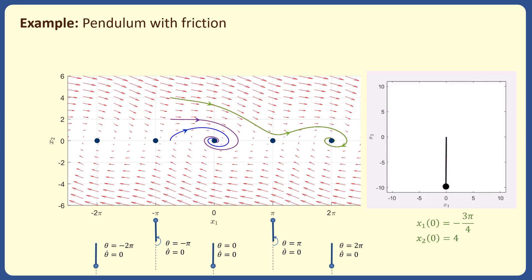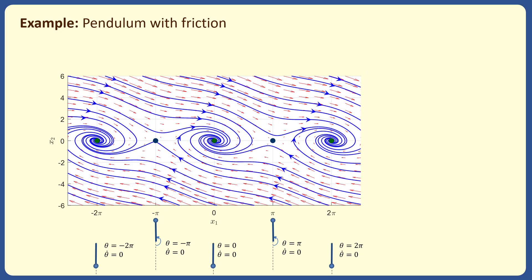We now plot the phase portrait of the system on top of the vector field diagram. Using the phase portrait, we can see the trajectories of the system for a large number of initial conditions. The vector field, however, has some information that the phase portrait doesn't — it shows how quickly or slowly x changes in the plane, which can be inferred from the length of the arrows.